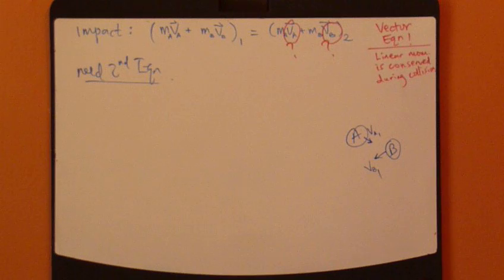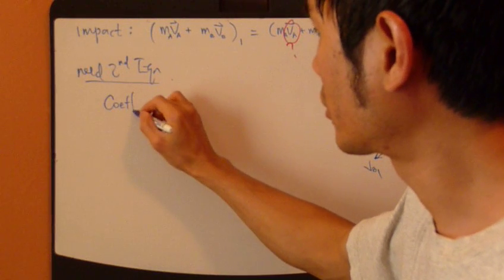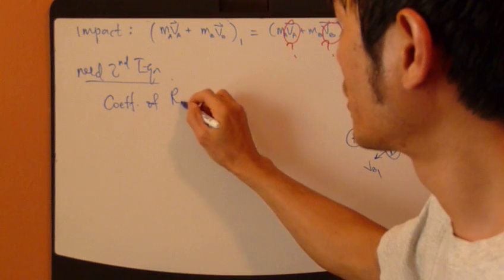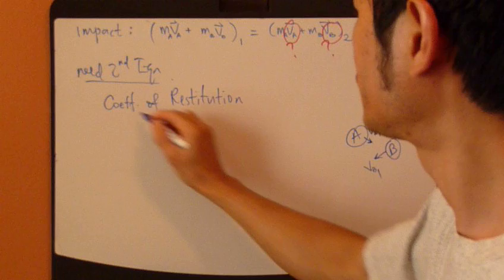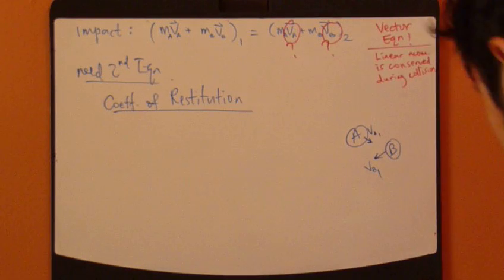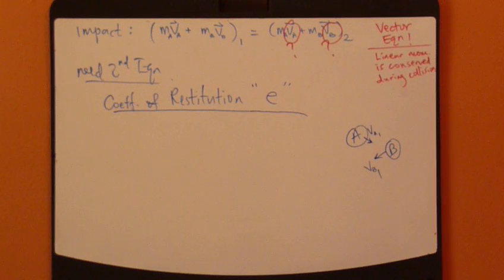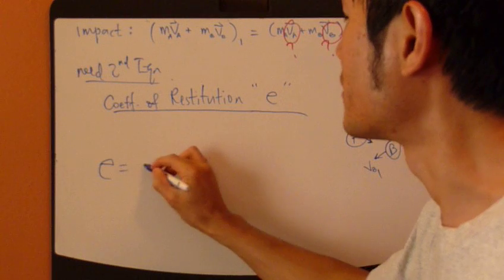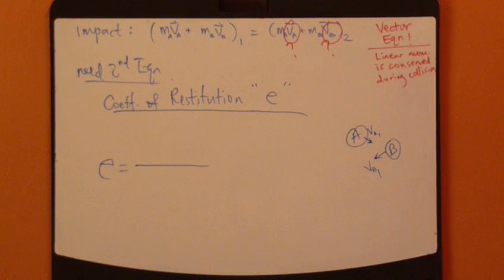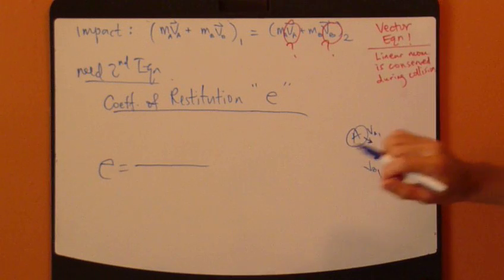Now, this kind of equation comes from something called coefficient of restitution. The symbol is E. This coefficient of restitution is defined in layman's terms.